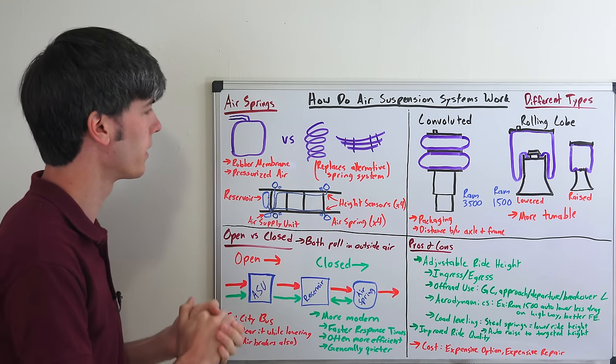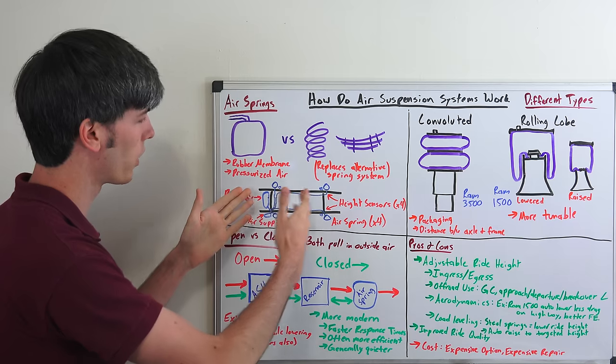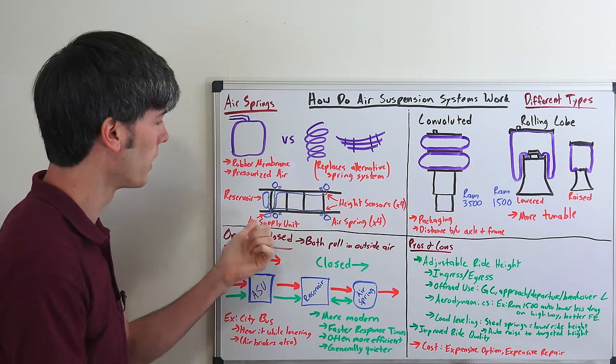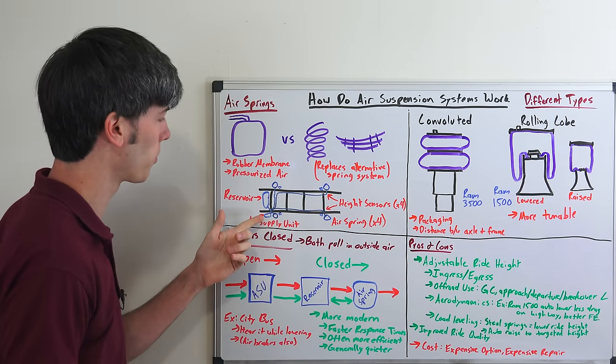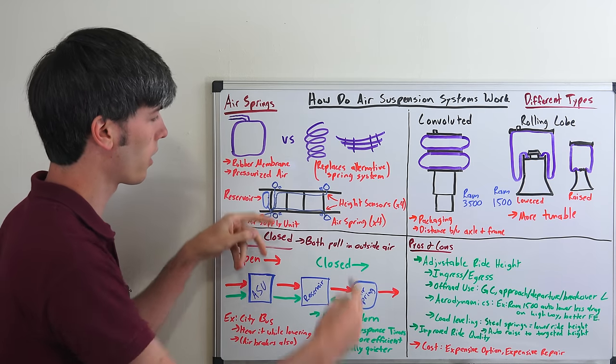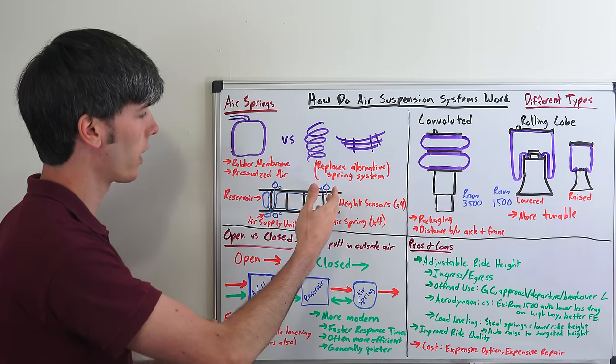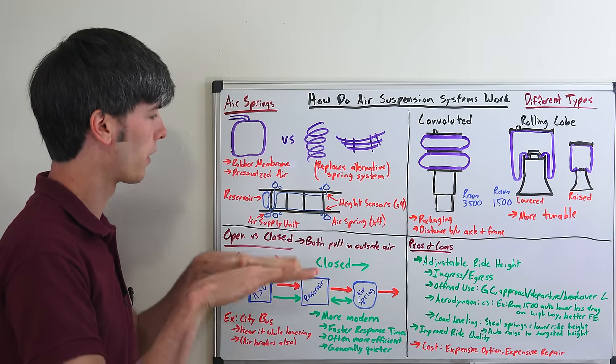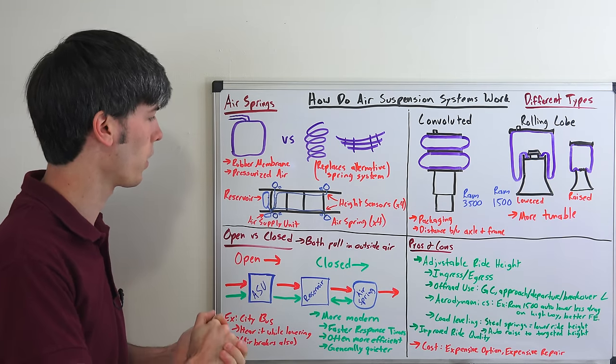Now there's some added hardware that goes along with this, so here we're looking at an example frame. You're going to have a reservoir, an air supply unit, basically an air compressor to supply air to the system. You're going to have your air springs at each corner and then you'll have height sensors to monitor the ride height at each corner as well.